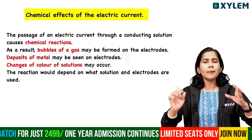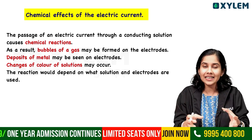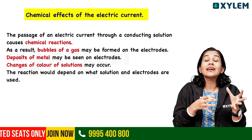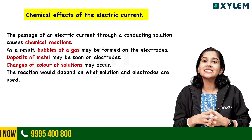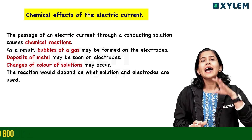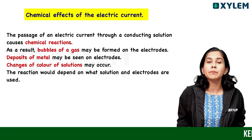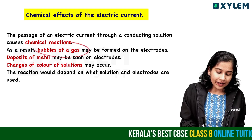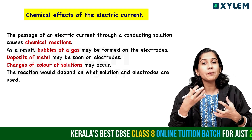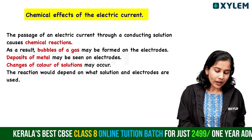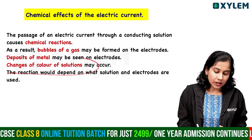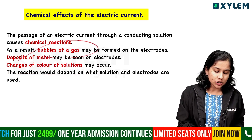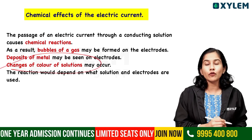We have learned that in a conducting solution, when we conduct electricity, chemical reactions occur. There are three types of chemical effects: bubbles of gas will form, next is metal deposition, and change of color of the solution.